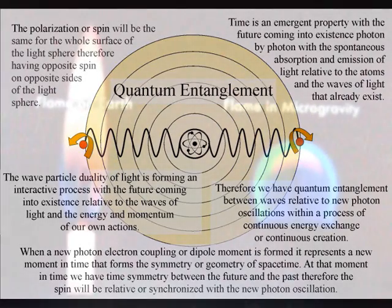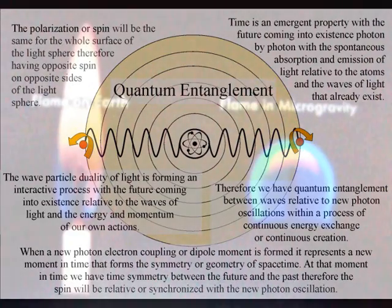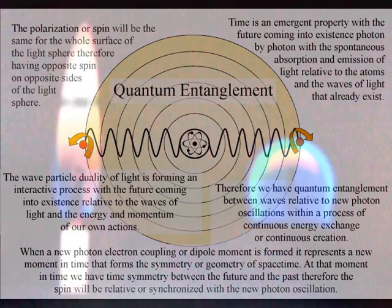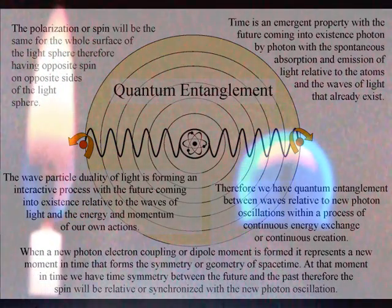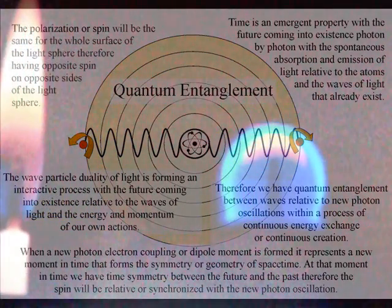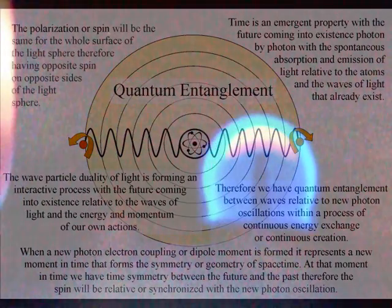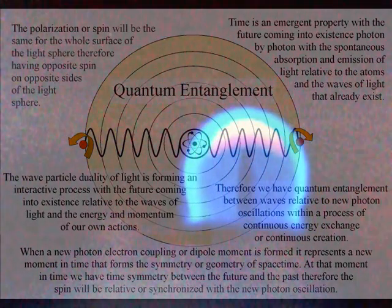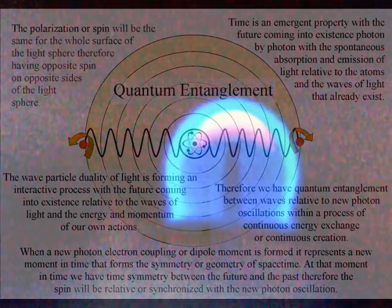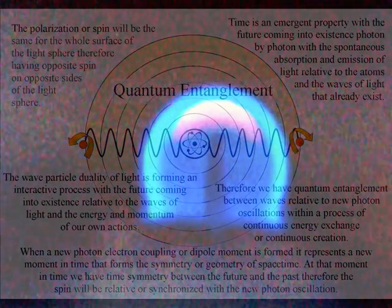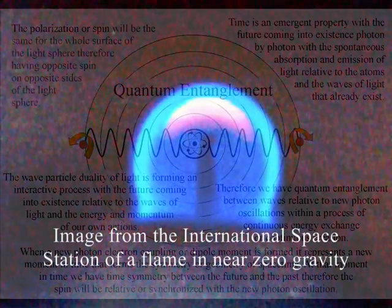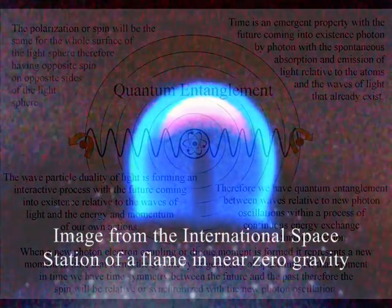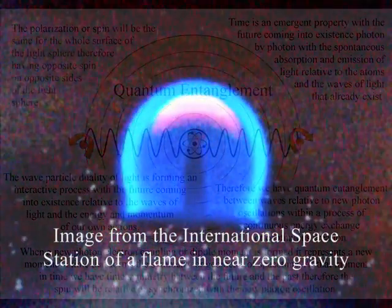An intuitive way of thinking of this is that the light source radiates out forming a sphere, with the polarisation or spin being the same for the whole surface of the light sphere, therefore having opposite spin on opposite sides of the light sphere.